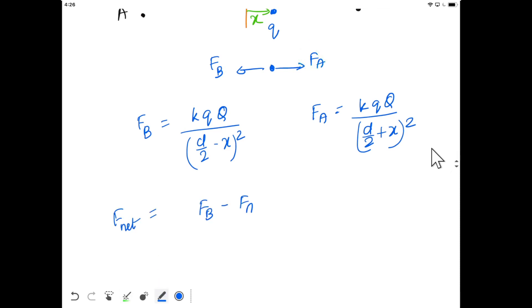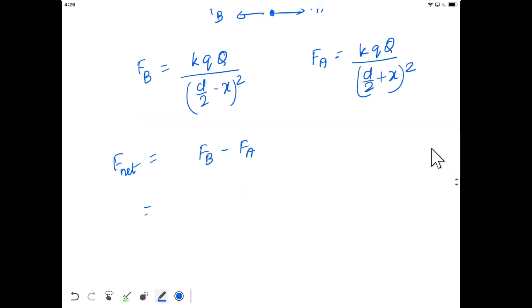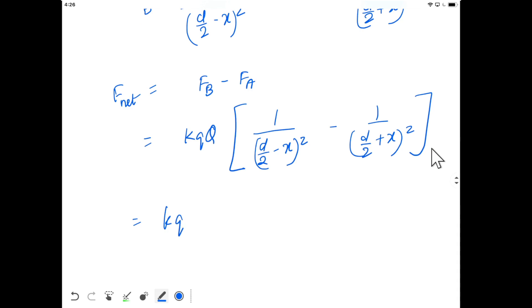F_B minus F_A, so kQq times 1/(d/2 - x)² minus 1/(d/2 + x)². This will be kQq divided by (d/2 - x)² times (d/2 + x)².